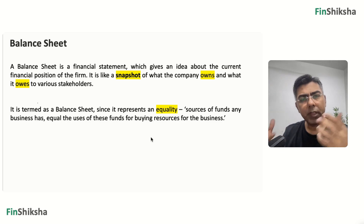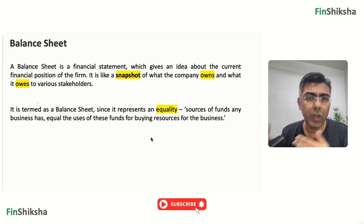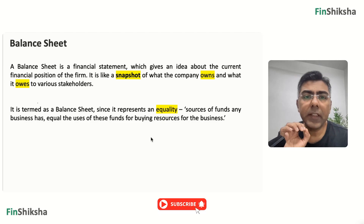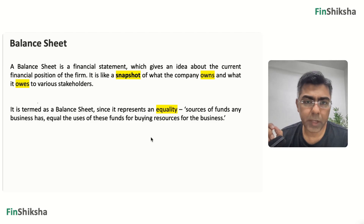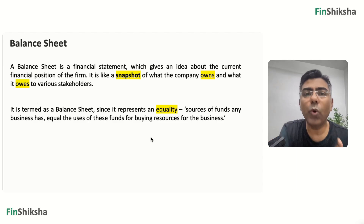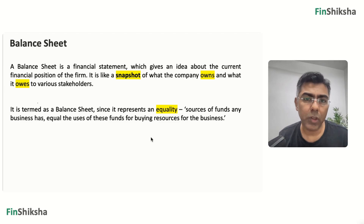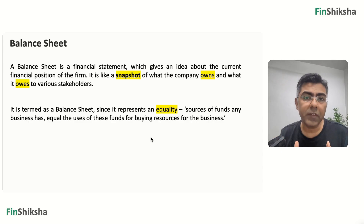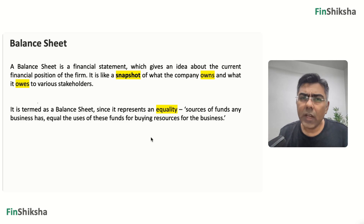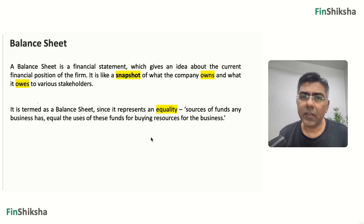When the company starts, it has taken money from some of its stakeholders. Equity holders or lenders would have given it the money — this is the money that the company owes to its stakeholders. Using this money, the company will go and buy business-generating assets. So what you owe versus what you own is what appears on the balance sheet. It's called a balance sheet because sources of funds collected will equal the usage of those funds, or be available as cash — unutilized funds.